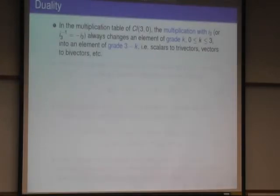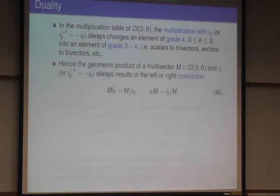Now let me talk about what is called duality. The multiplication table shows you, if you inspect it again, that the multiplication with I3 always changes an element of grade K into an element of grade 3 minus K. So 3 is the dimension of the space. So scalars are changed to trivectors. Vectors are changed to bivectors, etc. The geometric product of a multivector and I3 is therefore always a contraction, because you get this form, 3 minus K.